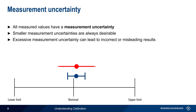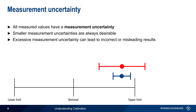A measurement with a much larger uncertainty, due to a poorly or uncalibrated instrument, may still produce acceptable results when the measured value is near the nominal value, as shown here. But when the measured value is close to the upper limit, the larger measurement uncertainty can lead to erroneous results, such as declaring something out of range when the true value falls within the limits. Properly calibrated instruments have lower measurement uncertainty, and therefore minimize the probability for different types of error.